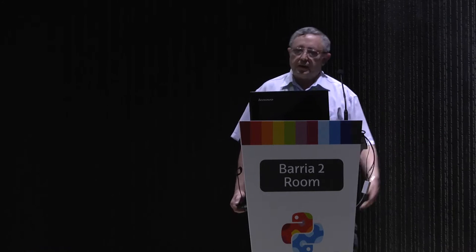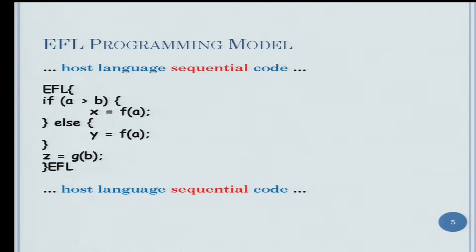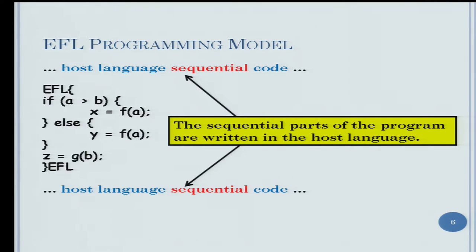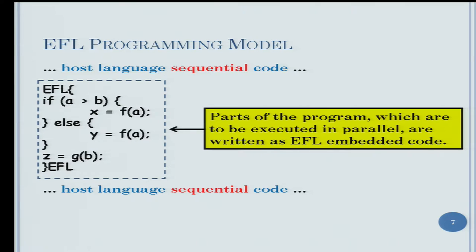The programming model of EFL: suppose we have a sequential program, and we decide that to have better performance, we want to parallelize part of the code. In those parts that the programmer wants to parallelize, we embed blocks of EFL — as you see here in the slide. The sequential parts of the program are written in the host language, maybe Python, maybe C, maybe any programming language. The parts to be executed in parallel are written as EFL embedded code.